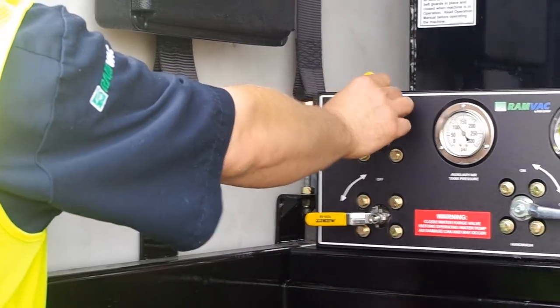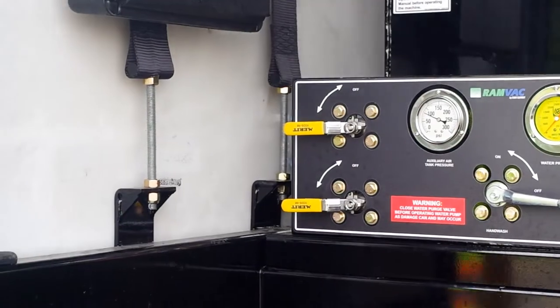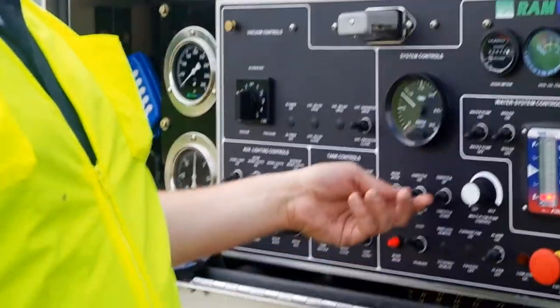With the auxiliary tank filled, you see the operator turning on the water purge and once again throttling the truck up to keep the air flow needed.